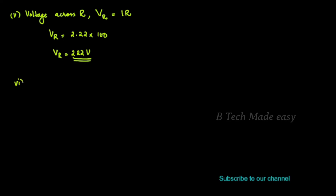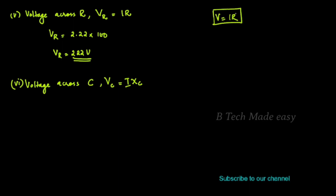The next question is to find the voltage across the capacitor. The voltage across C is VC = I × XC. Substituting I = 2.22 A and XC = 26.5 ohms, VC = 2.22 × 26.5 = 58.83 V.